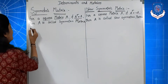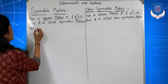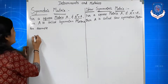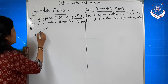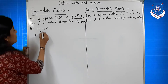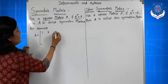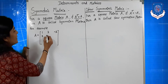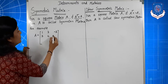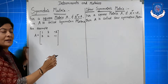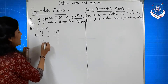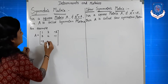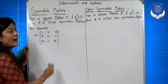For example, matrix A is equal to: 1, 3, minus 2 in the first row; 3, 4, minus 1 in the second row; and minus 2, minus 1, 5 in the third row.